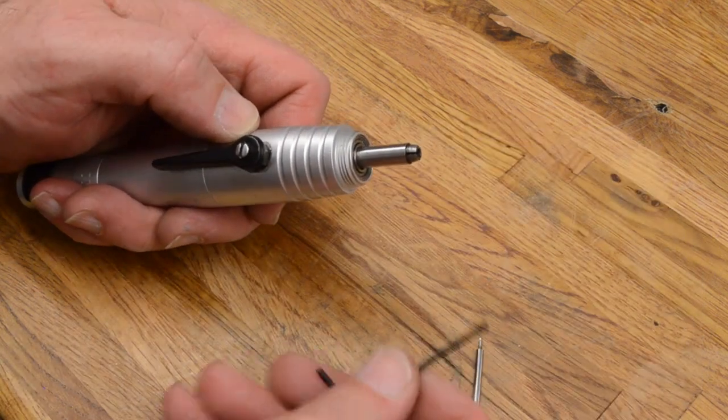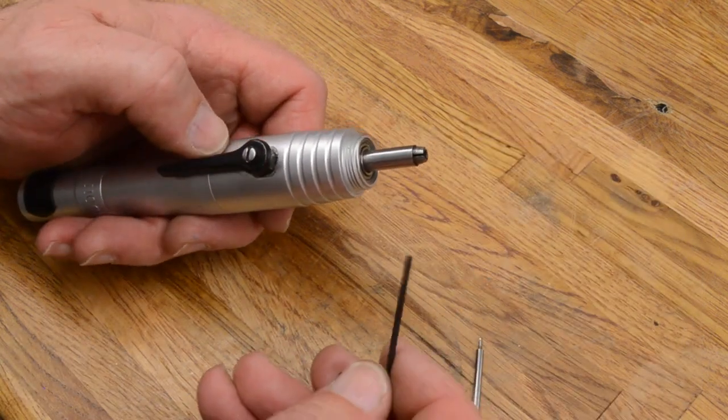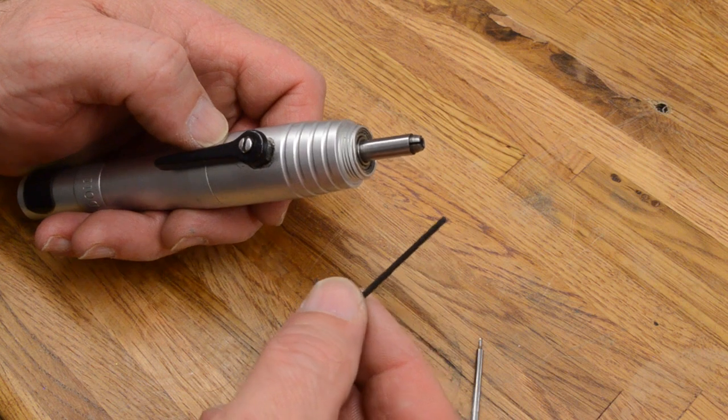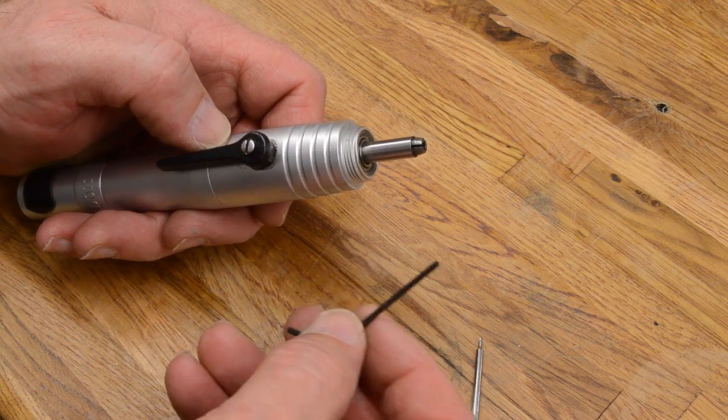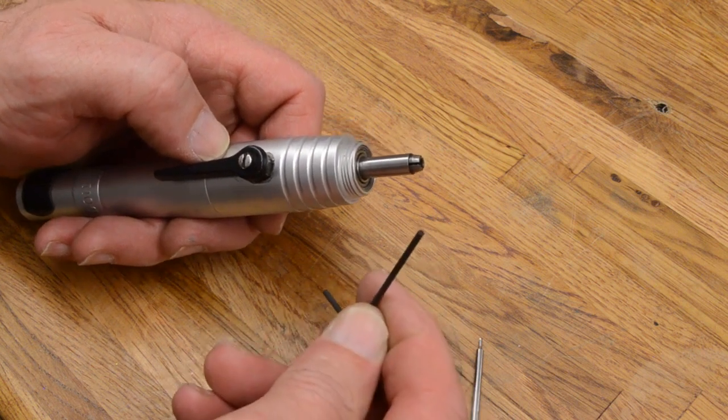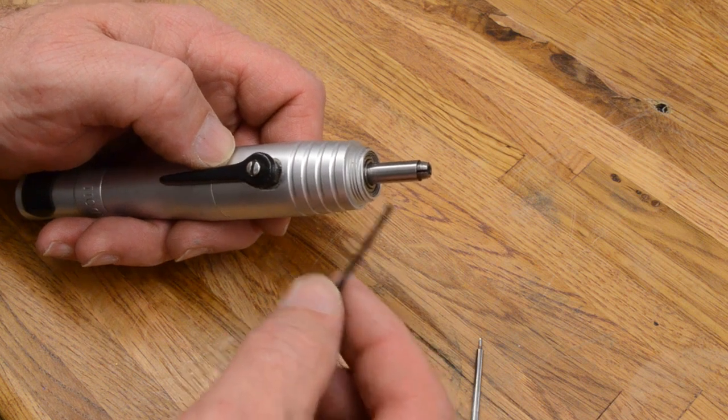So in your, with your handpiece, you would have gotten an Allen wrench. This is a 1/16th inch Allen wrench, and this is what you use to adjust the collet.